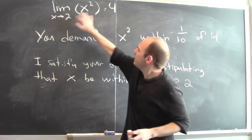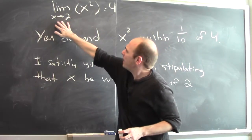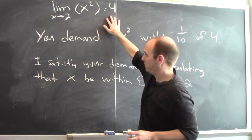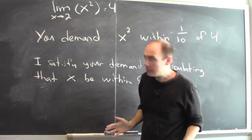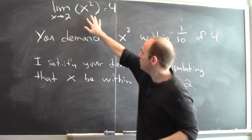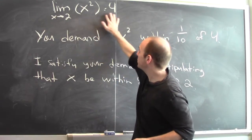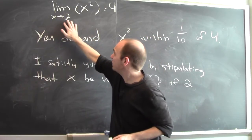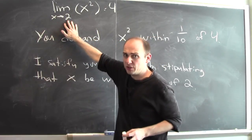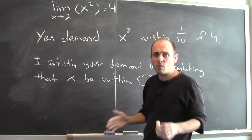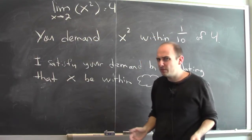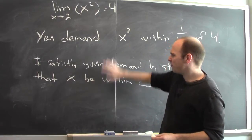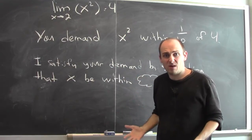What does it mean to say that the limit of x squared as x approaches 2 is 4? Well, strictly speaking, it means that you can make x squared as close as you want to 4 by making x sufficiently close to 2. But talking in that way can be a little bit confusing, so I want to format it here as if it were a dialogue.